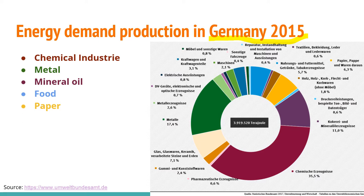The biggest energy-consuming industry in Germany is clearly the chemical industry. To produce chemicals you need energy: electricity to change molecules, oxidation processes, heating, cooling, and mixing all consume energy. The BASF site in Ludwigshafen, for example, consumes the equivalent energy of two or three nuclear power stations — incredible for one site. The next big consumer is metals. Producing steel and other metals requires a great deal of energy because you must heat metal to very high temperatures to melt it.